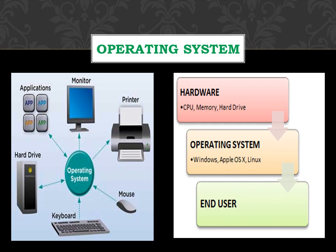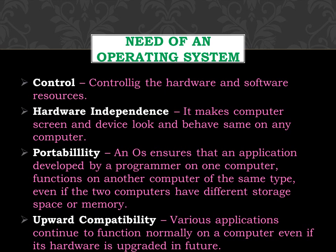Now, the need of an operating system. Why do we need an operating system? Because the operating system is a middleman between the hardware and the software. There are four needs for an operating system. First, the operating system controls the hardware and software resources. Second, the operating system makes the computer screen and devices look and behave the same on any computer.